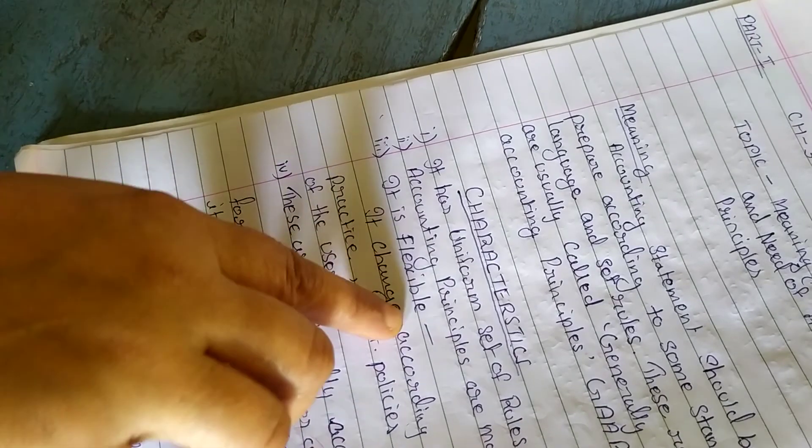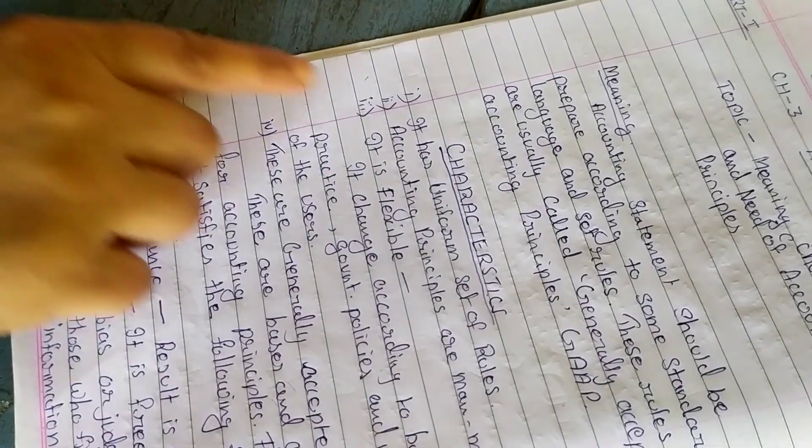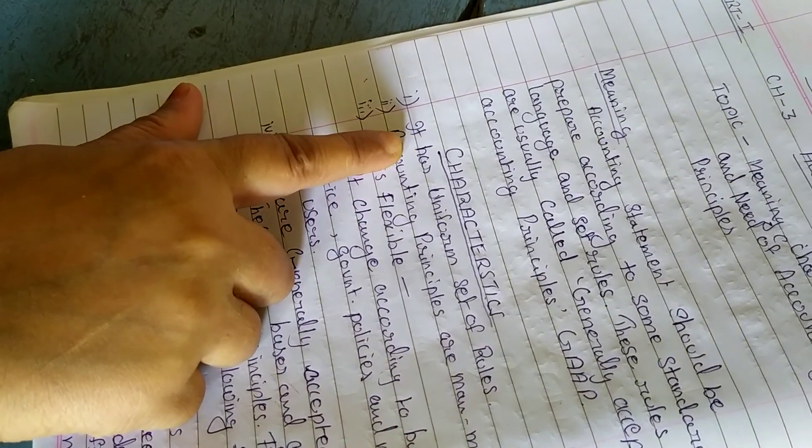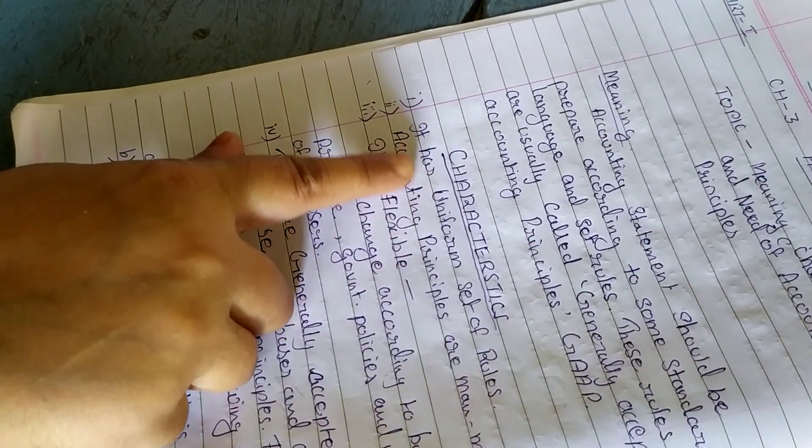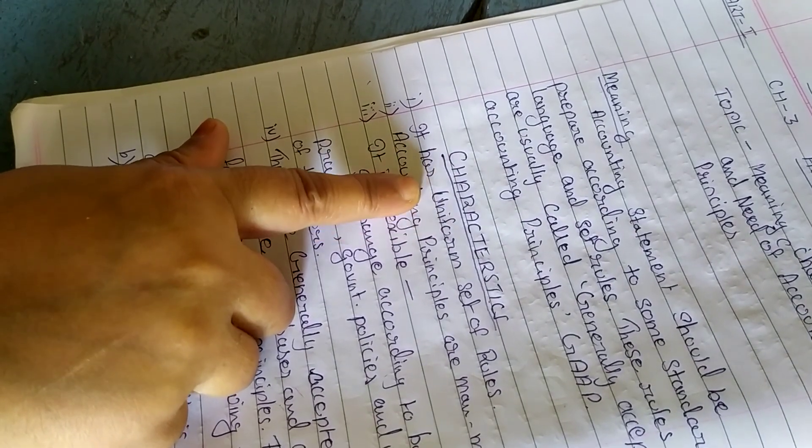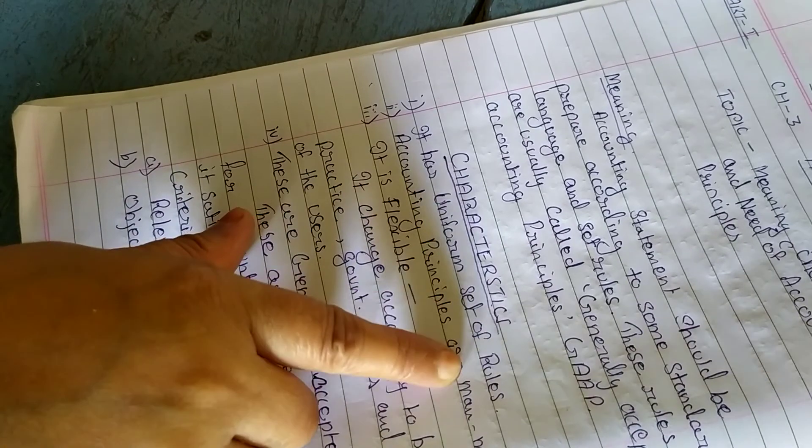Let's discuss the characteristics of Accounting Principle. The first characteristic, it has uniform set of rules. Obviously, accounting principles provide uniform set of rules.